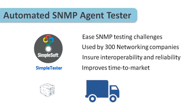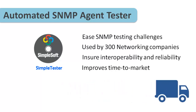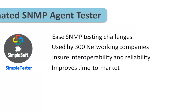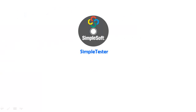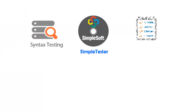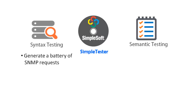SNMP agents implementing standard, experimental, and private MIBs can be exhaustively tested within minutes. SimpleTester includes over 1100 syntax and semantic tests that are ready to use. The syntax test suite generates a battery of SNMP GET, GETNEXT, SET, and GETBULK requests for each and every variable and table supported by the agent, and verifies that the agent responses comply with the SNMP protocol specification as defined in the RFCs.